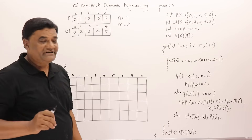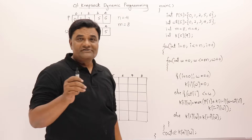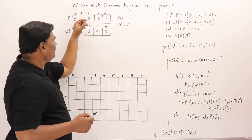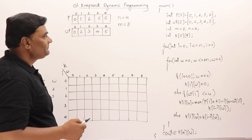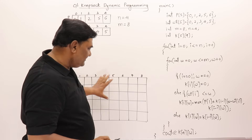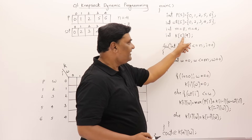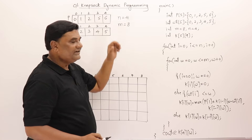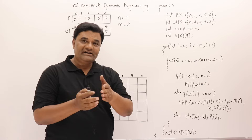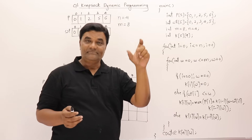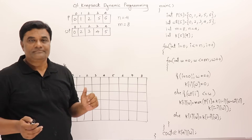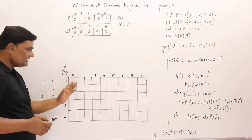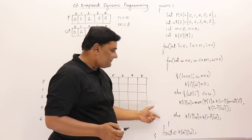One thing to observe: I have only four objects but the array size I have taken is five, because we want to start counting from one. The first object will not be called zero, we call it one. That is the reason I am taking the zeroth index as empty — set to zero. For solving this problem we need a table of size five by nine: five is zero to four for four objects, and nine is zero to eight for eight weights, giving five rows and nine columns.